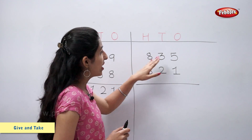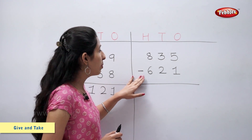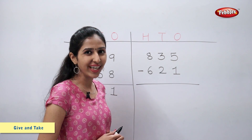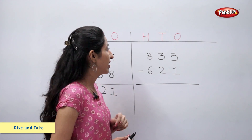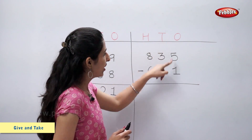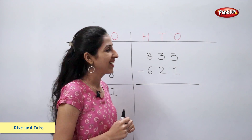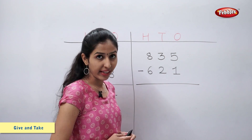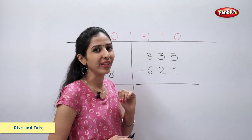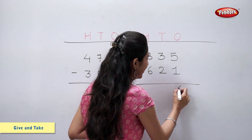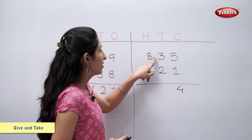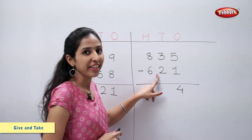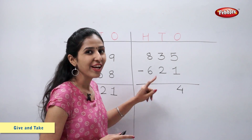Eight hundred and thirty-five minus six hundred and twenty-one is equal to how much? Let's find out. Let's subtract ones first. Five minus one is equal to four. Three minus two is equal to one.